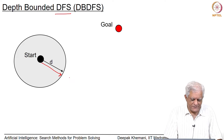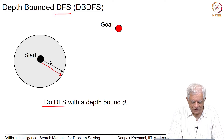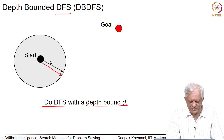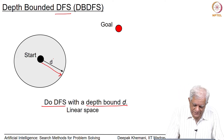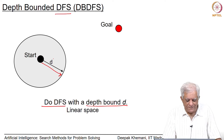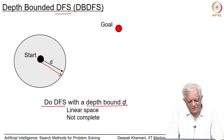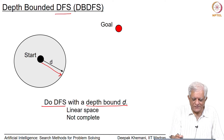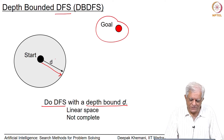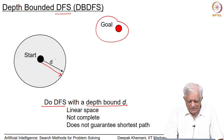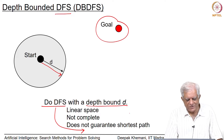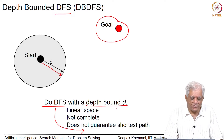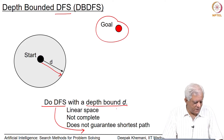Otherwise, the algorithm is depth first search. Essentially what you do is depth first search with a depth bound of d, where d is given to us. As you can see this will be linear space, because this is really depth first search. As you can see this is not complete, because the goal may be outside this boundary, so it will never find that goal. Also because it is depth first search, it will not guarantee the shortest path — even if there were two goals within its boundary, it might find the one with the longer distance.